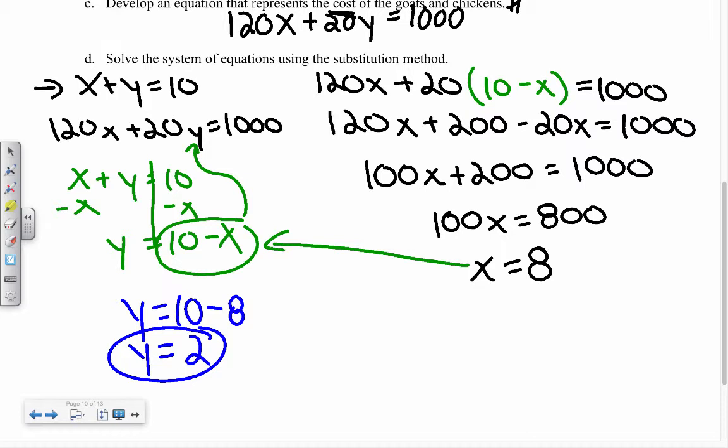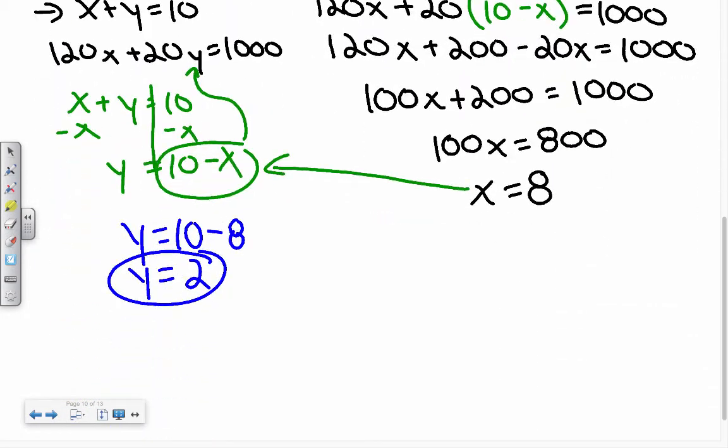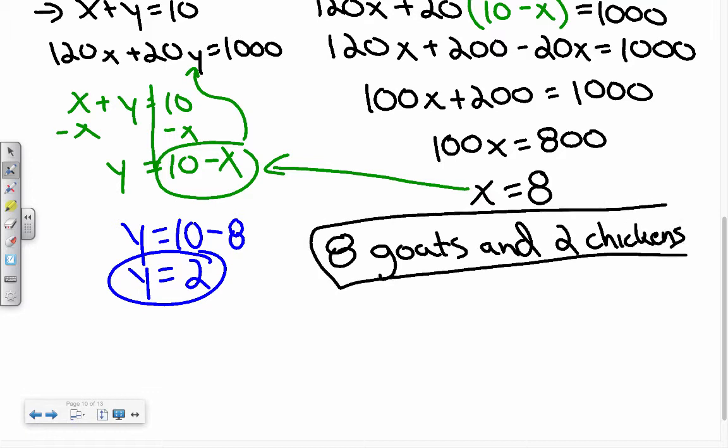So, I have to go back to my original question. My original question says, how many goats and flocks of chickens will be sent to the village? Well, X represents goats. Y equals chickens. So, my answer to this is 8 goats and 2 chickens. So, it's all about the setup. It's all about defining your variables. Creating two equations to then solve. The next problems on the next page will practice those skills. Come to me with any problems. Thank you.